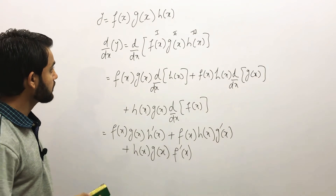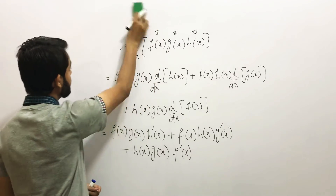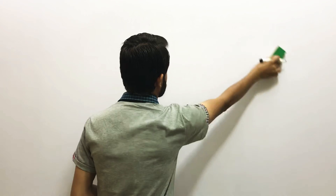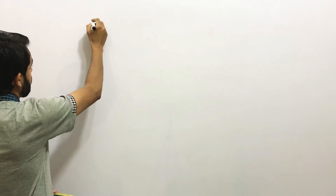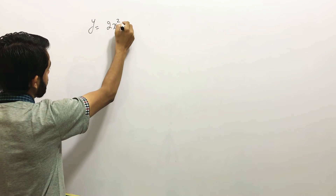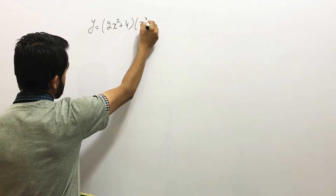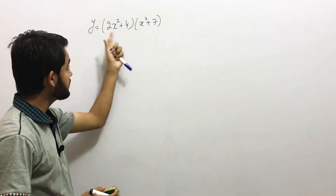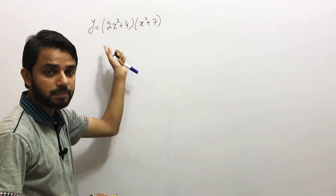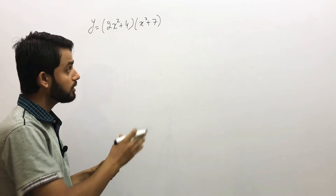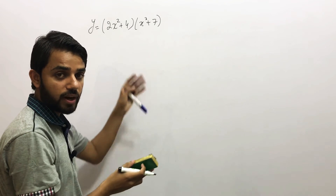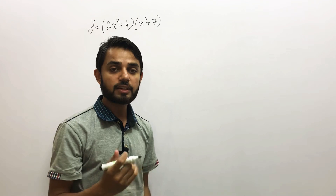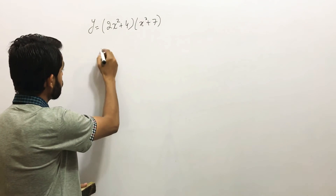Let's solve a quick example applying the product rule with two functions. Let y = (2x² + 4)(x³ + 7). Here f(x) = 2x² + 4 and g(x) = x³ + 7. This is an explicit function because all x values are on one side of the equation and y is on the other, written as y = f(x).